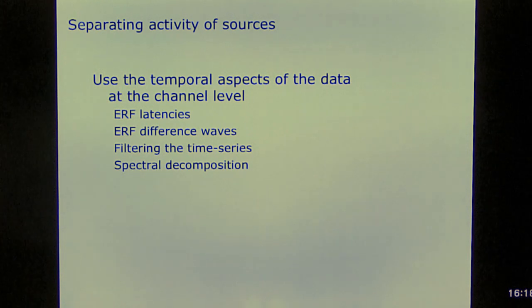So we can use the temporal aspects of the data to look at separating, so we can look at different event related fields. Latencies, we can look at different waves. Since the data is a linear superposition, if I have two conditions, condition A and condition B, if I subtract the two conditions, the ERPs of the two conditions, what I'm going to see is a difference wave. And a difference wave corresponds to those brain regions that are differentially activated in the two conditions. So that's a very powerful technique. Of course, we can also use filters for the time series to focus on lower frequency activity, higher frequency activity. If you're interested in gamma band activity, then you can also apply a high-pass filter and ignore all the low frequency content. And of course, you can use spectral decomposition, which is more appropriate for frequency analysis.